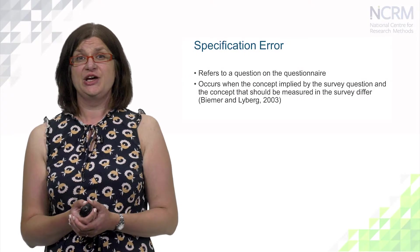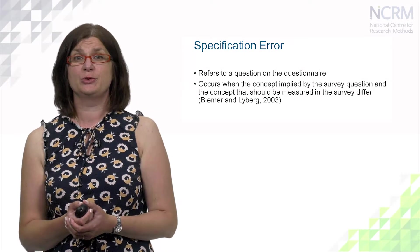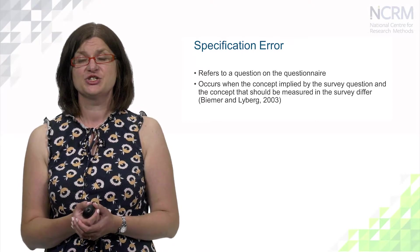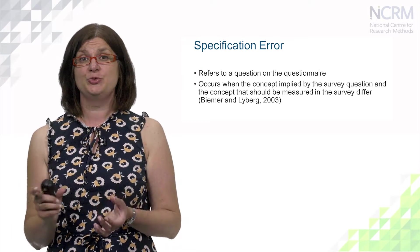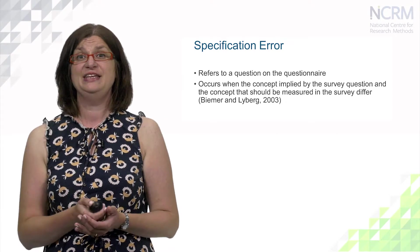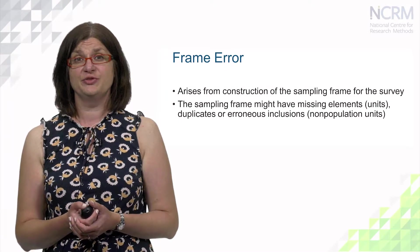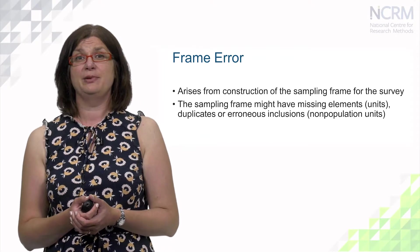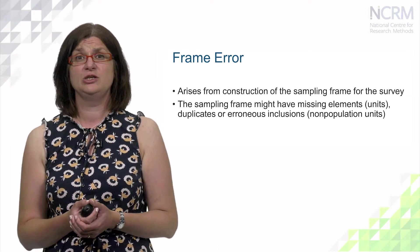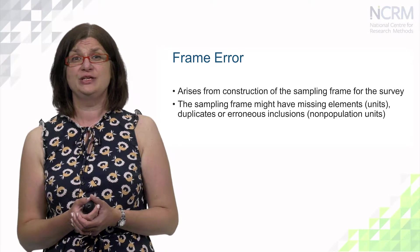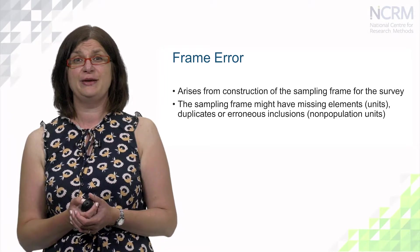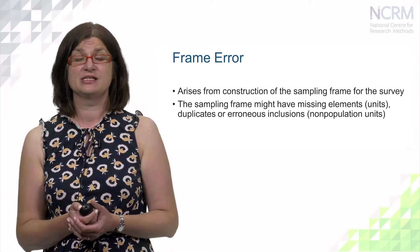Specification error refers to a question on the questionnaire. It occurs when the concept implied by the survey question and the concept that should be measured in the survey are not the same – they differ. Frame error arises from construction of the sampling frame. The sampling frame might have missing elements or units, erroneous inclusions where non-population units are included, or it might have duplicates.